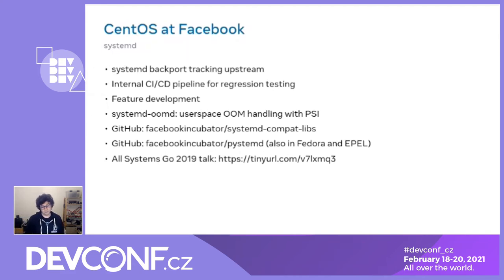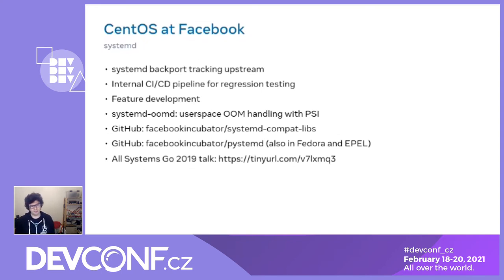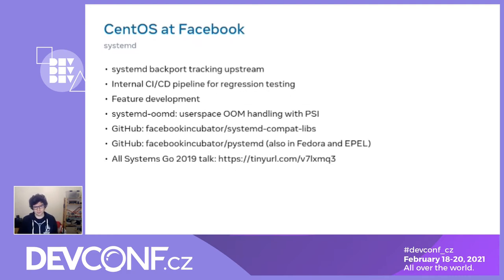We started using systemd at Facebook when we did the CentOS migration. This went from a handful of people doing work with it and the rest of the company being fairly skeptical, to almost everybody embracing systemd and wanting to leverage its features. One thing I want to highlight is systemd-oomd because it's a fairly recent change and it's also coming in Fedora 34.